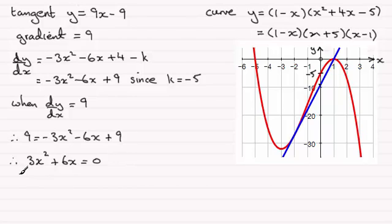So I can now factorize this. I could pull out 3x as a common factor. So therefore 3x bracket x plus 2 equals 0. And solving this we can see that either this factor x would equal 0 or the factor x plus 2 would equal 0 leading to x equaling minus 2.